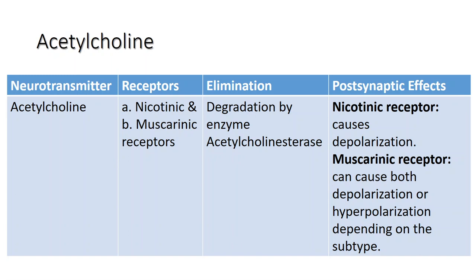Nicotinic receptors are found in the neuromuscular junction, in several areas of the brain, as well as in the autonomic ganglia. Muscarinic receptors are found in several areas of the brain, smooth muscles, and glands.